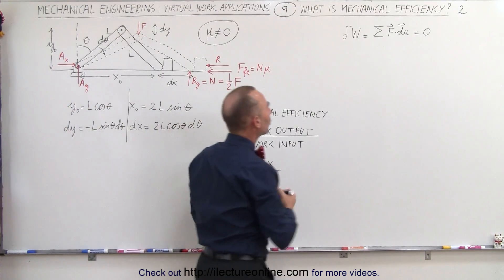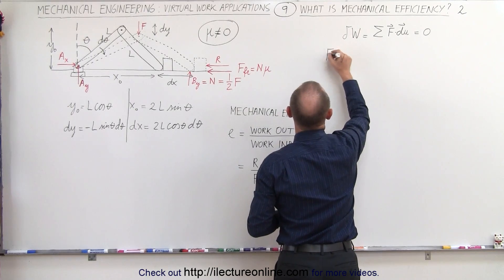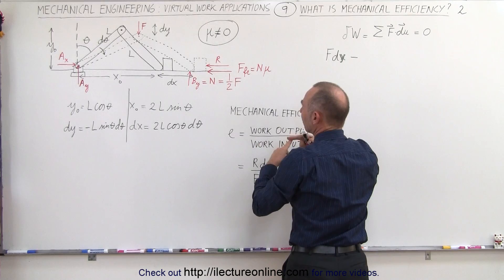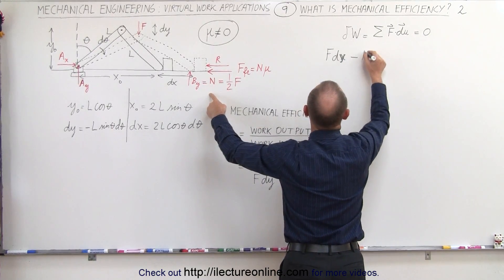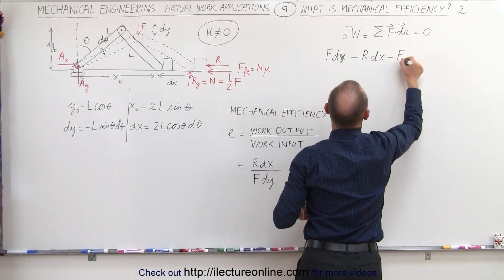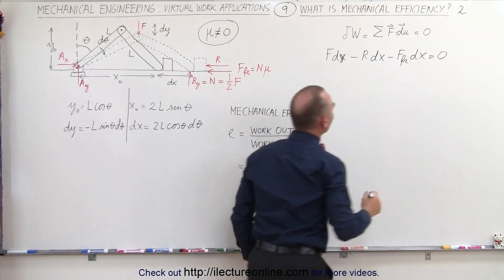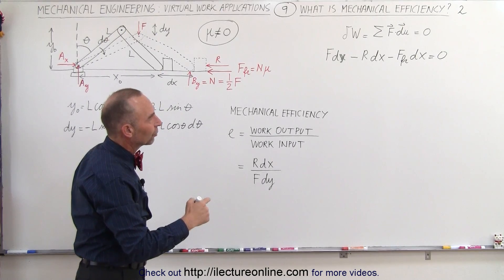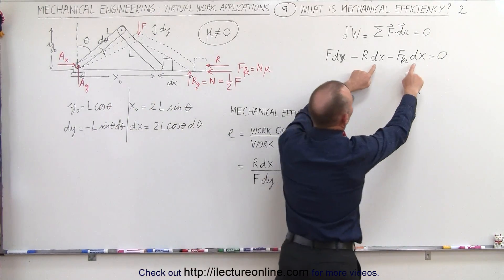When we add up all the forces doing virtual work, we get f multiplied by dx, minus r times dx (because the cosine of 180 degrees is negative one), and minus the friction force times dx, and all those add up to zero. Note that the cosine of zero and cosine of 180 degrees for the respective terms give us positive one and negative one.